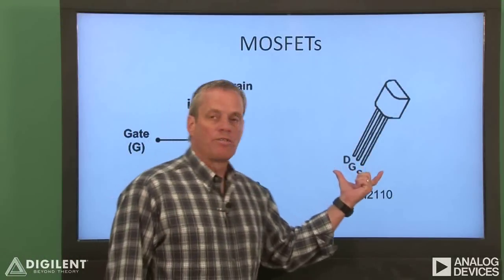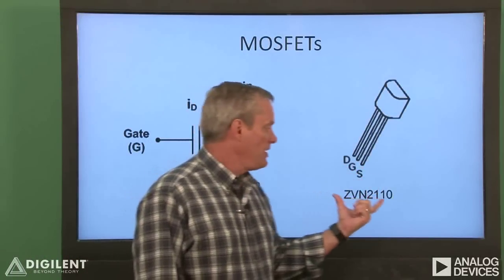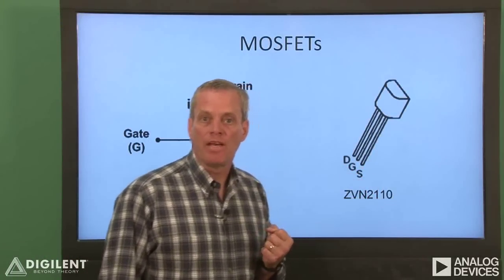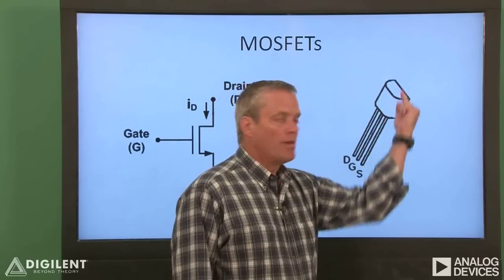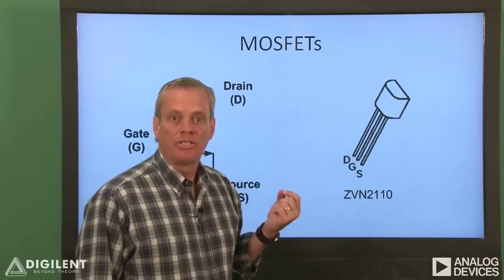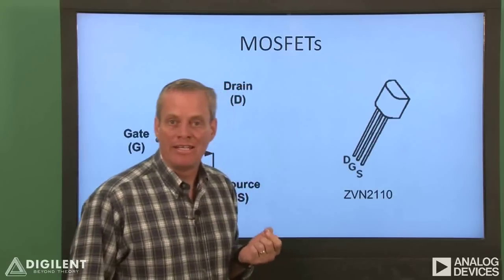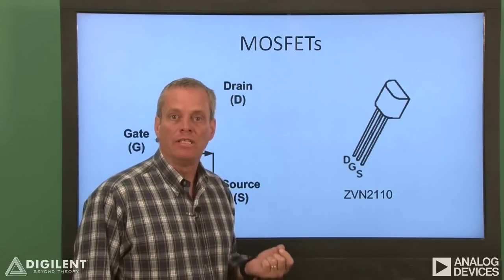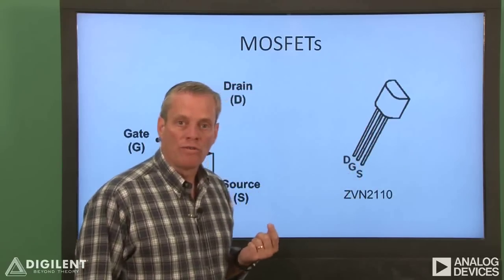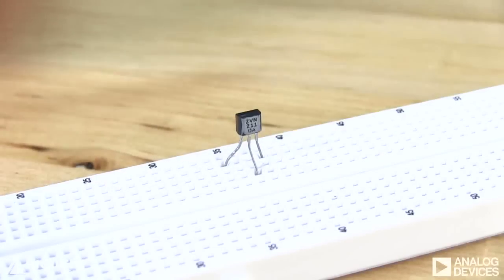This is a picture of the MOSFET that we'll be using in our demo. It's a ZVN2110A MOSFET. One side of the body of the MOSFET is flat, the other side is curved. This configuration allows you to identify the three leads. If you're looking at the curved side, the order of the pins are the drain, the gate, and the source.